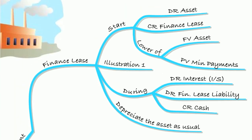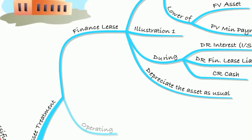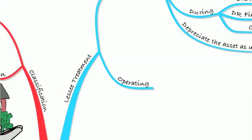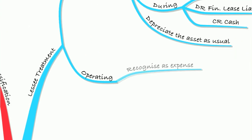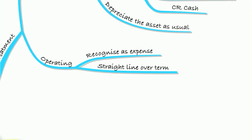We also need to depreciate the asset as usual. We covered all of this in Illustration 1 in the lecture. Remember, if it's not a finance lease it will be an operating lease. For operating leases, we recognise the lease as an expense each year — the amount paid as an expense.